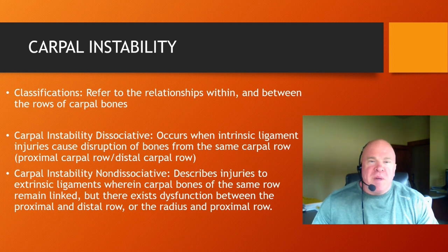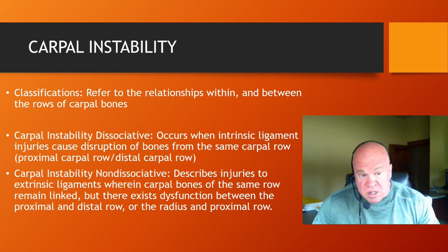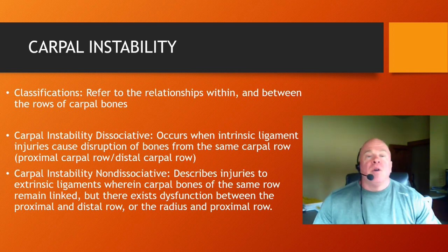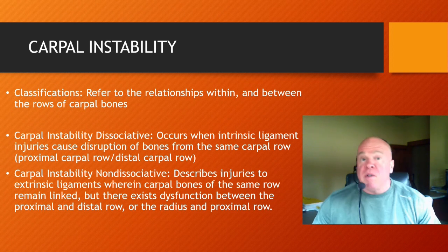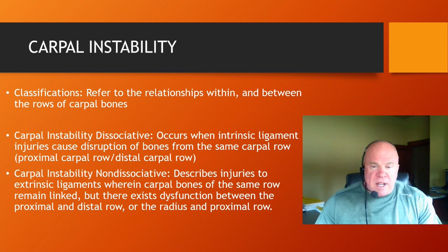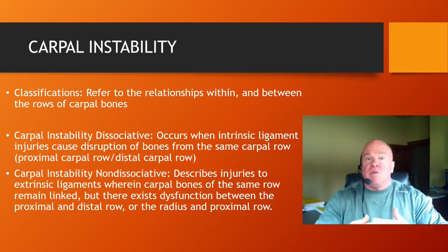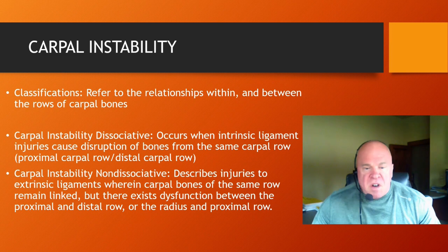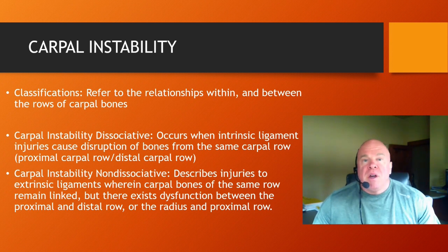These are referred to as intra-carpal injuries. The opposite — inter-carpal injuries — describes the non-dissociative carpal instability pattern. This is when you have injuries to extrinsic ligaments spanning rows of the carpus — spanning the distal radial-ulnar joint into the proximal row of carpal bones, or spanning from the proximal row of carpal bones to the distal row. In non-dissociative patterns, carpal bones of the same row remain linked, but there exists dysfunction between the proximal and distal rows, or between the distal radius and the proximal row of carpal bones.